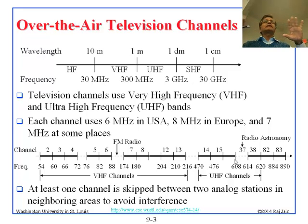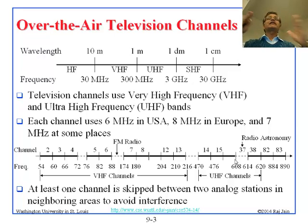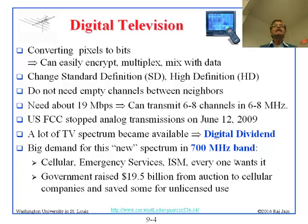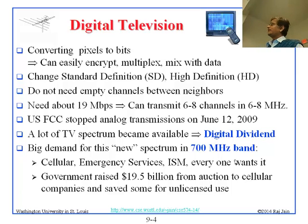So, not all channels are allocated in all cities. You cannot allocate alternate channels, and you have to use a different set of channels in the next city so there is no interference. That was analog. Now we change to digital. Digital means you take the pixels, the colors, and convert them to bits. The advantage is that you can easily encrypt, multiplex, and mix with data — and you can have standard definition or high definition. With digital, you don't need all those empty guard spaces.